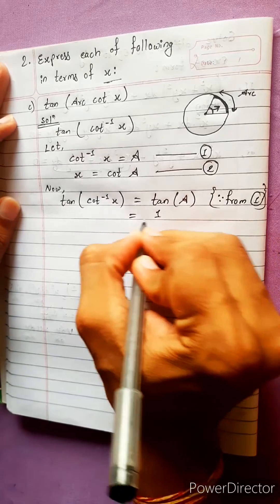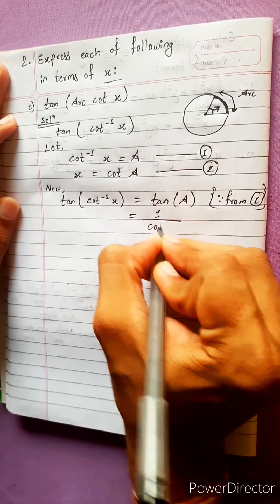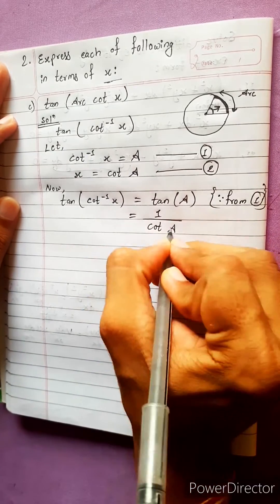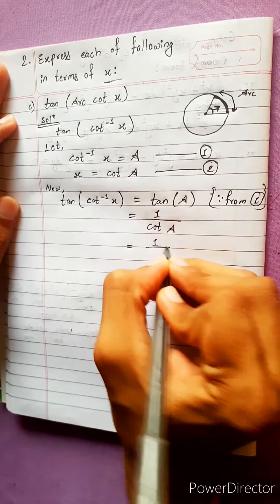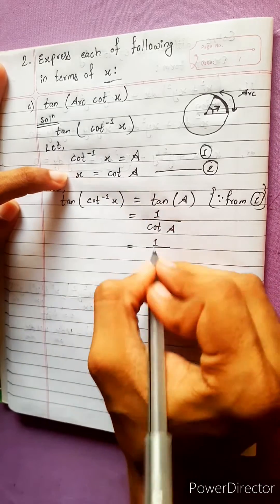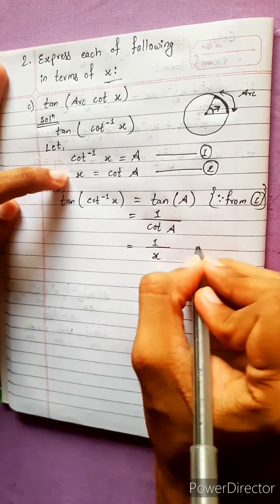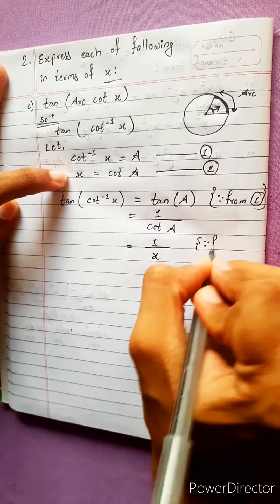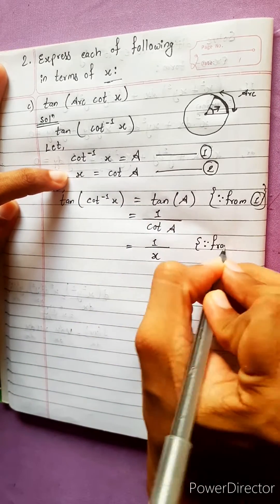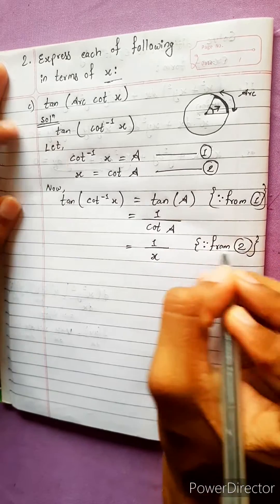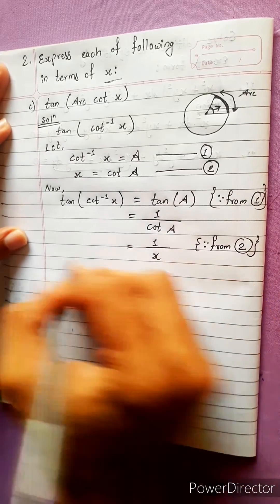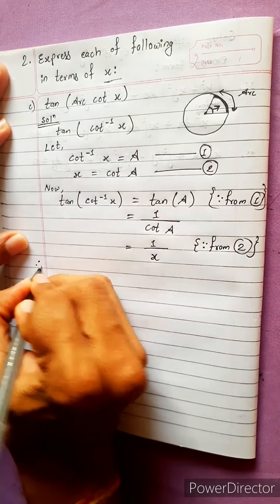tan means 1 by cot. Now 1 by cot a means x — this is from equation 2. So the result is 1 by x.